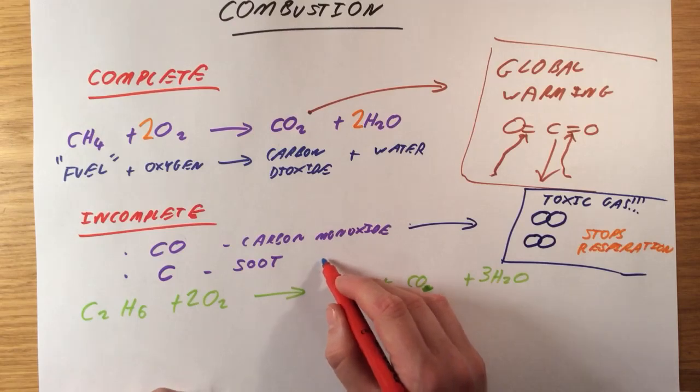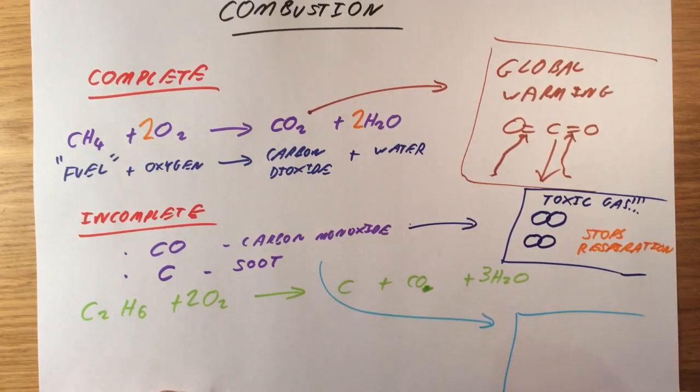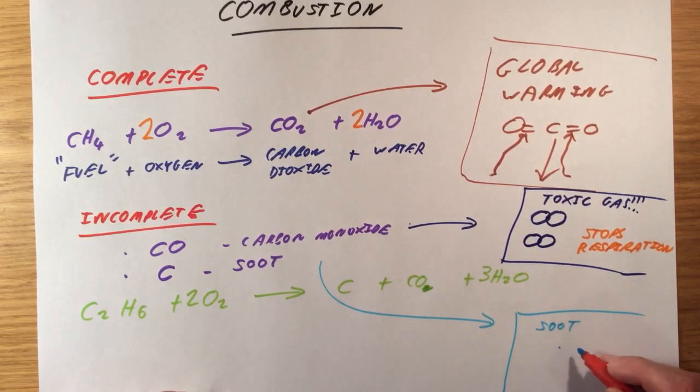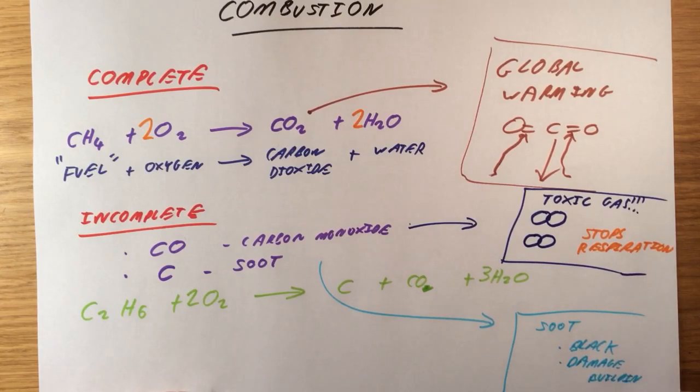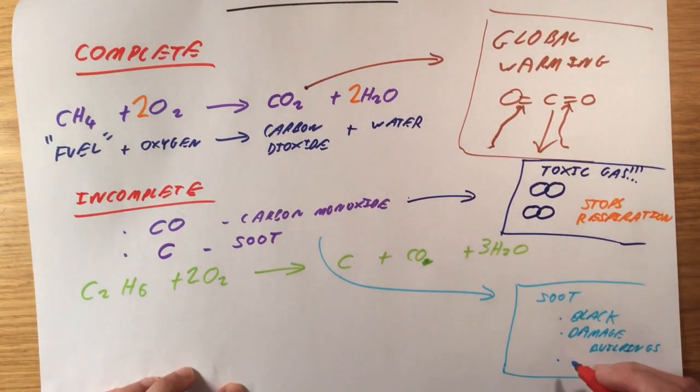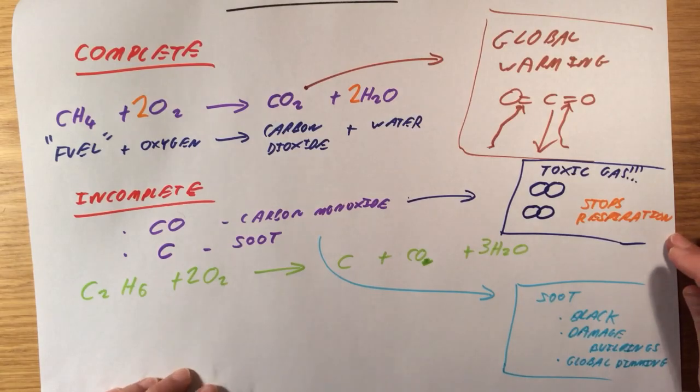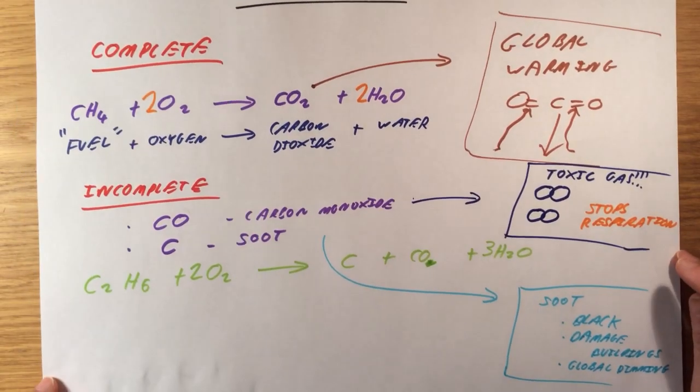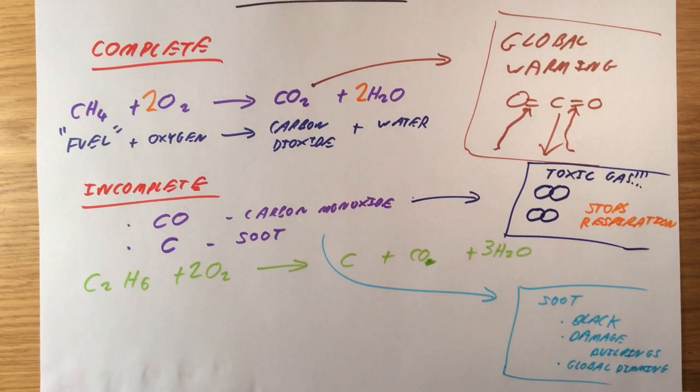Soot is black, and it damages buildings. Soot is effectively a black powder. It can damage buildings. It can lead to breathing problems. It can possibly lead to asthma, or coughs, things like that. And it also leads to something called global dimming. And this is a big problem in big built-up cities, particularly in London and places like some Chinese cities, where there's too much soot in the atmosphere, and it starts to absorb sunlight and can lead to global dimming.